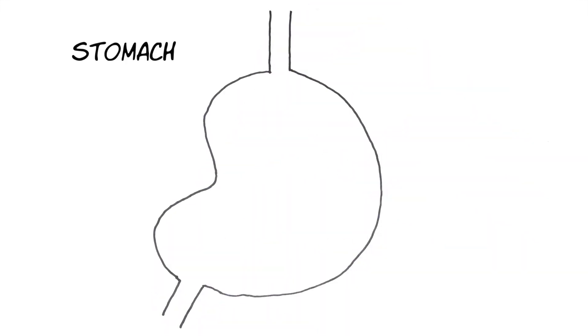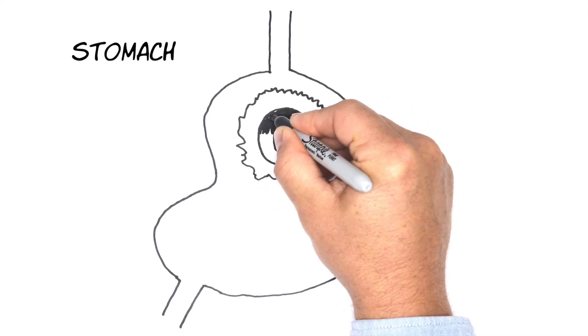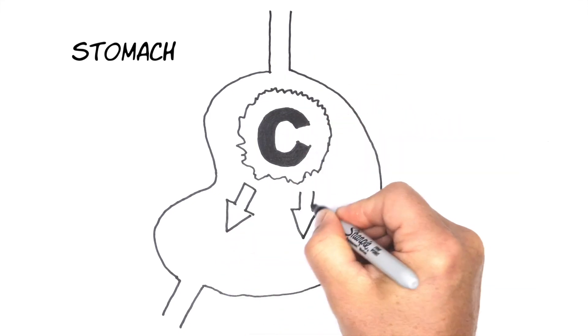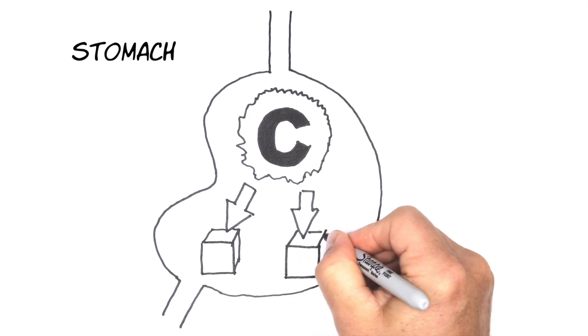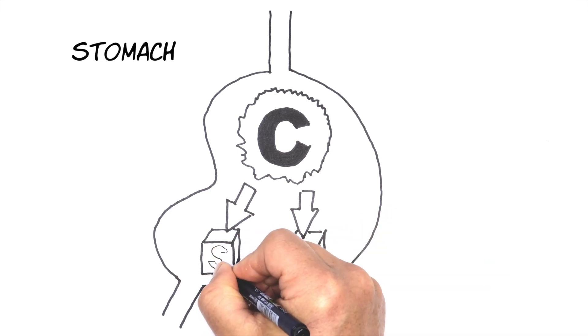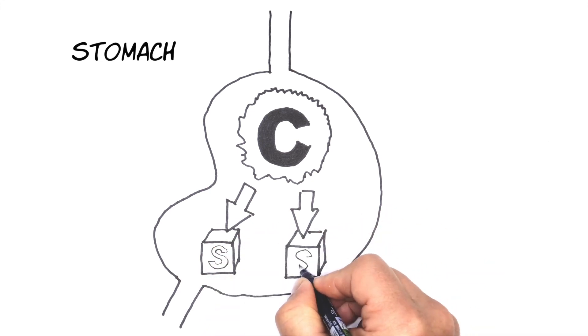When food that contains carbohydrates, e.g., bread, rice, pasta, potatoes, fruit, and dairy products, enters the body, the stomach starts to break them down to sugar, also known as glucose.